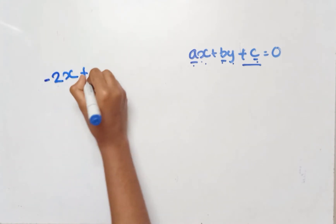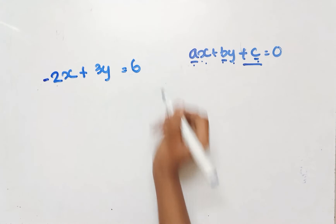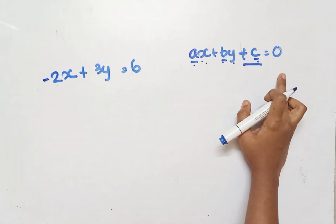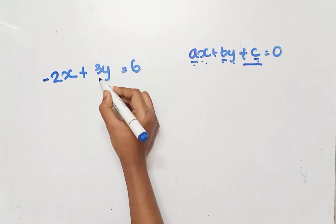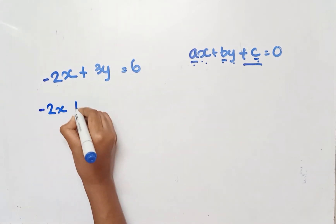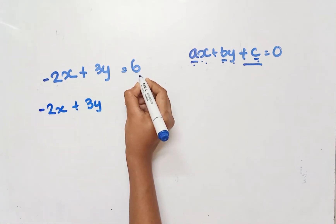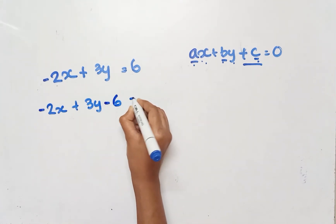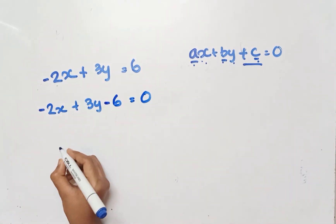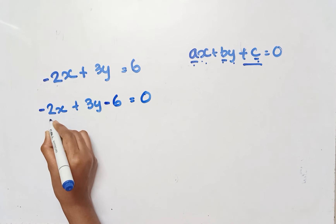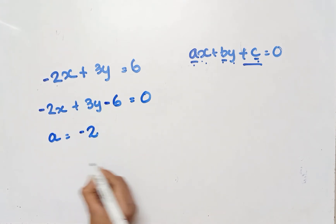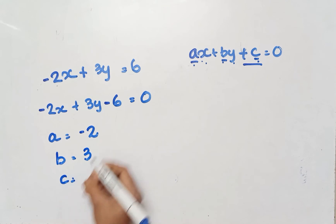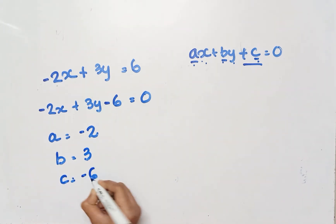Third sub-question: negative 2x plus 3y equals 6. We move 6 to the left side: minus 2x plus 3y minus 6 equals 0. So A is negative 2, B is positive 3, and C is negative 6.